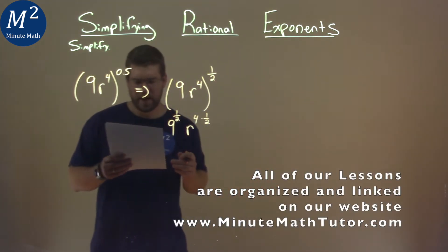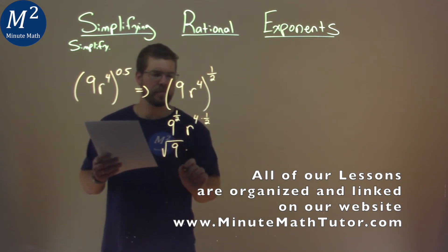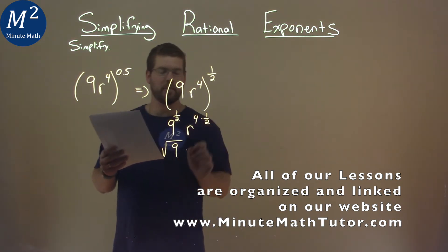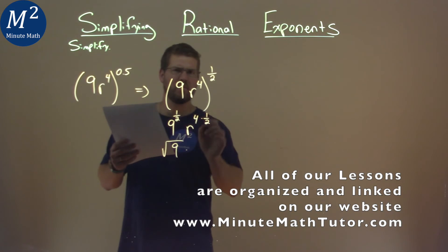Well, 9 to the one half power is the same thing as the square root of 9. r, or 4 times one half, well, 4 times one half is just 2, so we have r squared here.